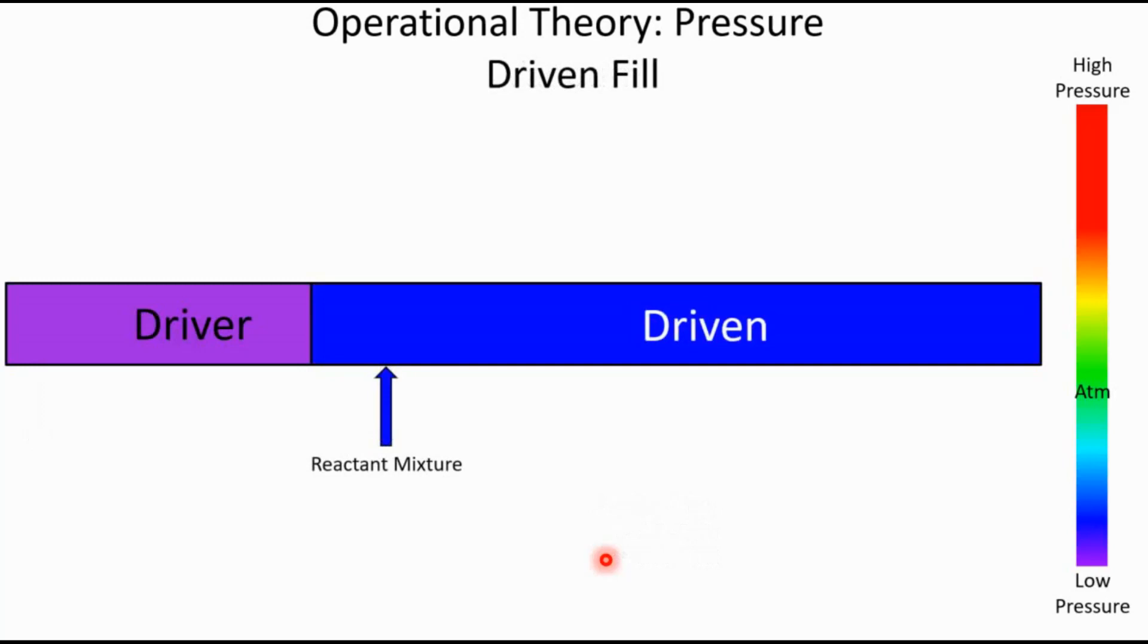So now, once we've pulled everything down, we put just a little bit of reactant mixture in there. So we might put up to a few torr—10, 20, 30 torr in there—and that again depends on what your end conditions want to be. Typically, the reactant mixture that we fill this with is some fuel and some oxidizer, so say methane and air, or ethylene and oxygen.